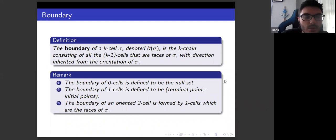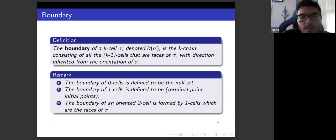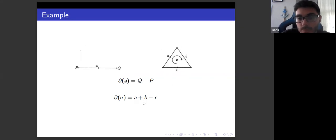The boundary of a cell is a chain consisting of all the one-lower-dimensional cells that are faces of that cell. The boundary of a point is the null set. The boundary of a line segment is the terminal point minus the initial point. The boundary of an oriented two-cell is formed by the one-cells which are the faces of the two-cell. For example, the boundary of a triangle consists of its edges. The boundary of one-cell a is q minus p, and the boundary of sigma equals a plus b minus c, because sigma has a clockwise orientation and c is in the opposite direction.